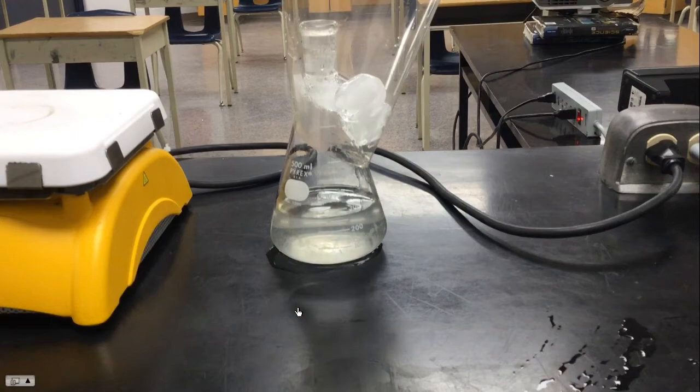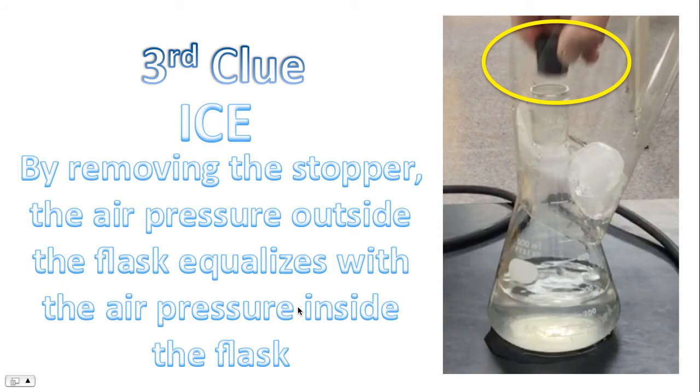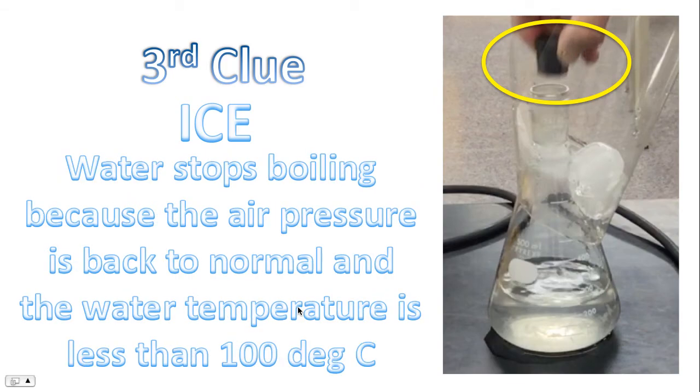Notice the water has stopped boiling. So why is that? Well, by removing the stopper, the air pressure outside the flask equalizes with the air pressure inside the flask. Water stops boiling because the air pressure is back to normal.